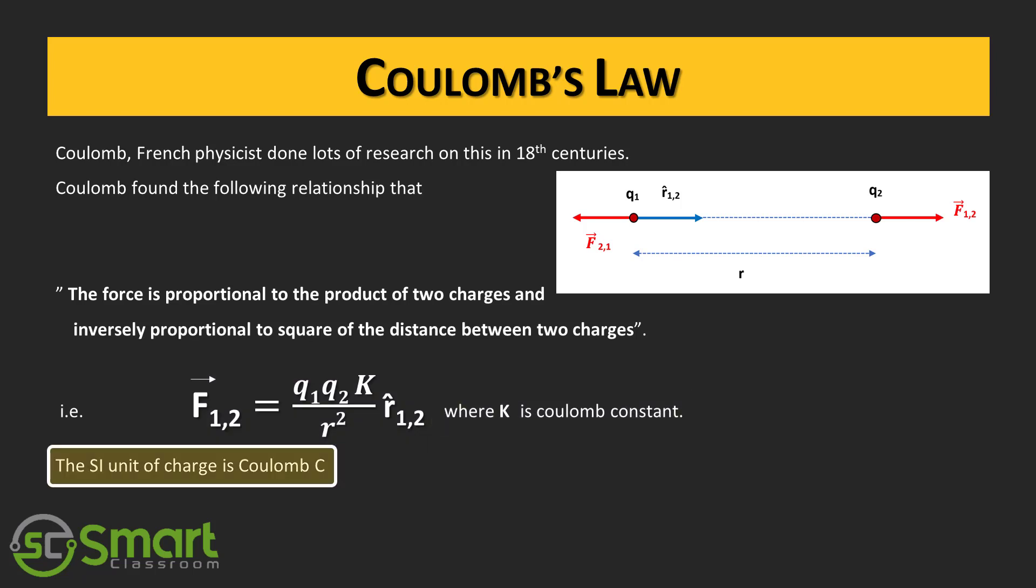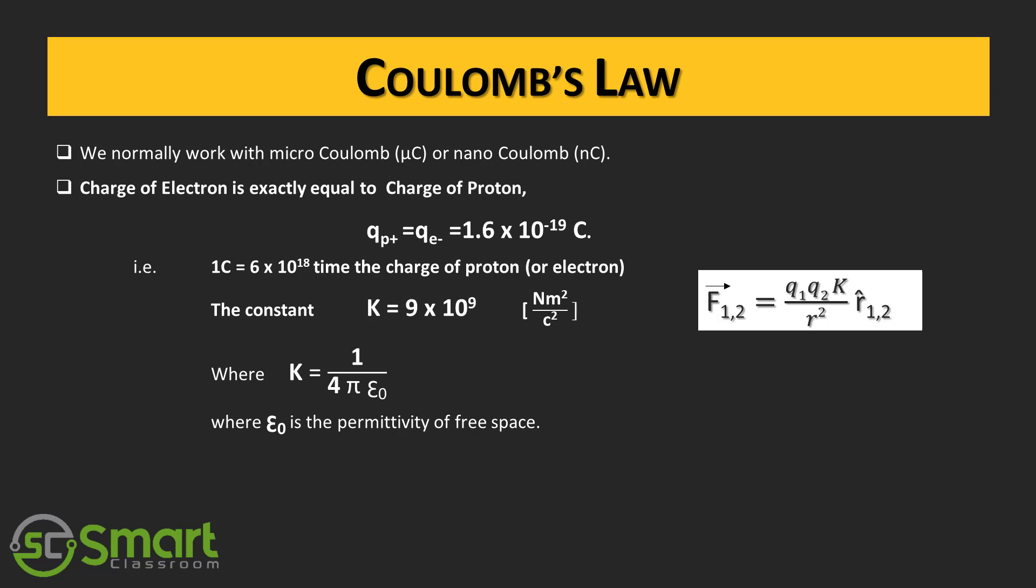The SI unit of charge is Coulomb, represented by capital C. One Coulomb of charge is a tremendous amount of charge, larger than you ever seen in your lifetime. We normally work with micro coulomb or nano coulomb. The charge of electron is exactly equal to the charge of proton, that is 1.6 into 10 to the power 19 coulomb. One coulomb equals 6 into 10 to the power 18 times the charge of the proton or an electron.